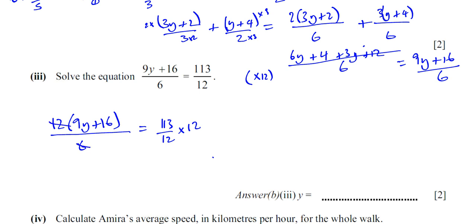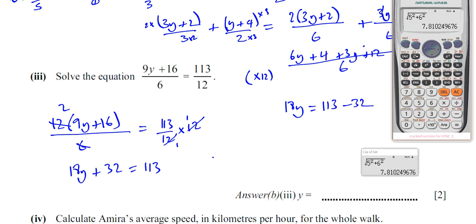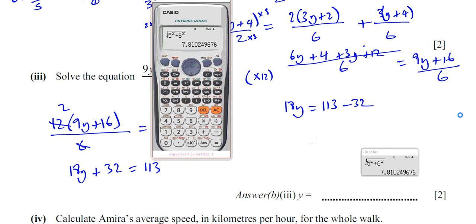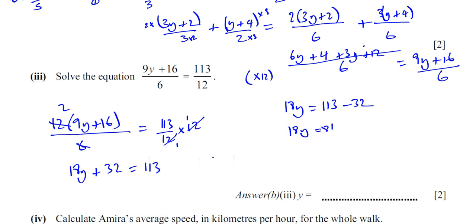So we get 2 times 9y is 18y, and 2 times 16 is 32, equals 113. Therefore 18y equals 113 minus 32, which is 81. So y equals 81 divided by 18, which gives us 4.5.